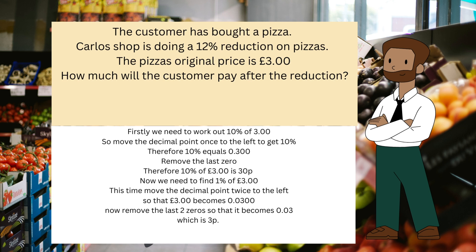Firstly, we need to work out 10 percent of three pounds. Move the decimal point once to the left to get 10 percent — therefore 10 percent equals 0.30. When you move the decimal point to the left and there is no other number to the left, you put a zero before the decimal point. Remove the last zero: therefore 10 percent of three pounds is 30 pence.